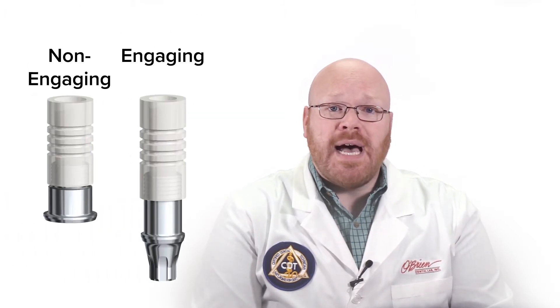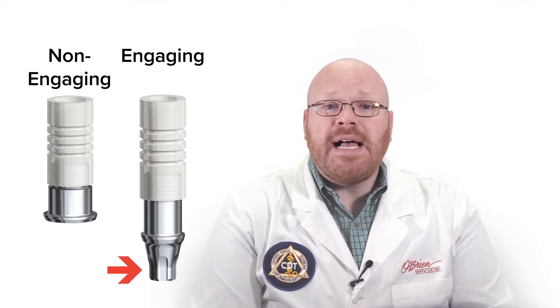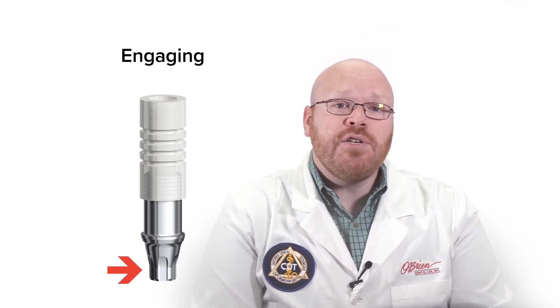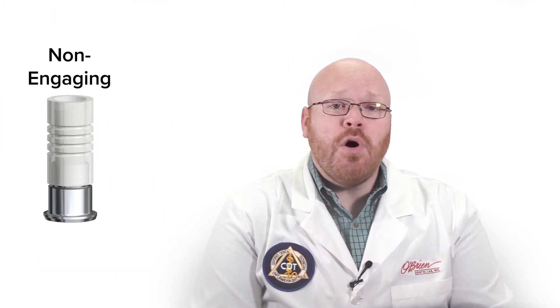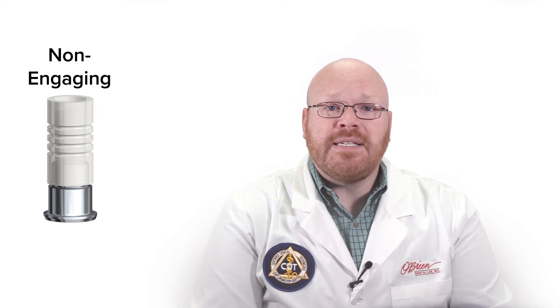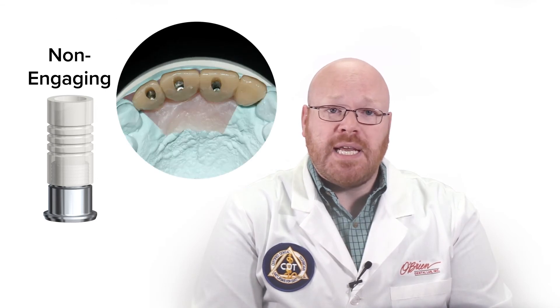UCLA abutments come in both engaging and non-engaging styles. The engaging style has anti-rotational features at the interface, and is used for making screw retained crowns and custom abutments. The non-engaging style has no anti-rotational features at the interface, and is only used for making screw retained bridges.